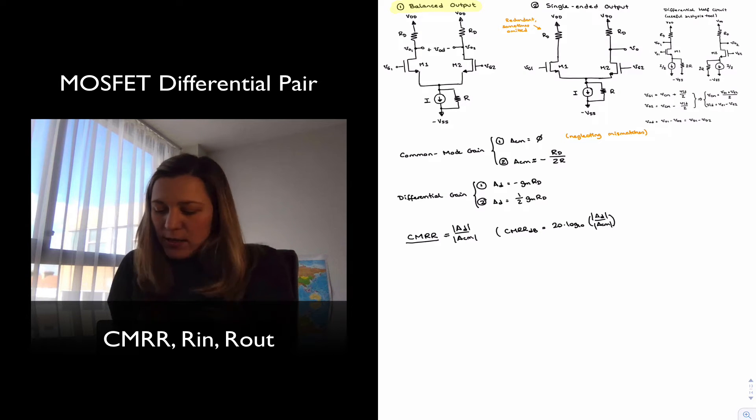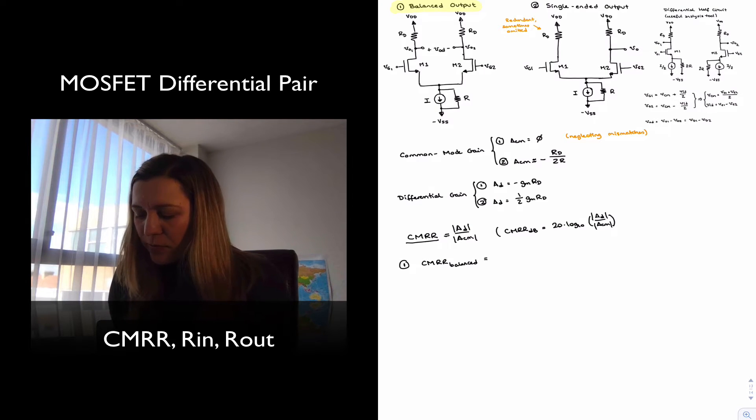All right, so we can proceed. In the case of the balanced output differential amplifier, so the CMRR balanced, it's going to be equal to the absolute value of GM times RD divided by 0, which was the ideal value of common mode gain, assuming we are neglecting any mismatches, and therefore this is equal to infinity. So an ideal value of CMRR assuming perfect matching between the two branches.